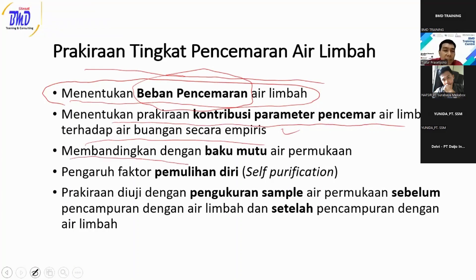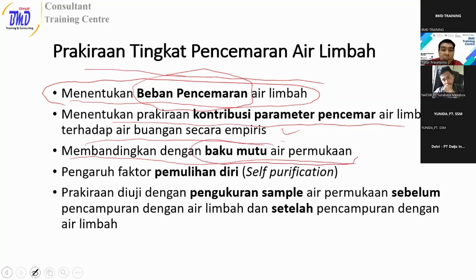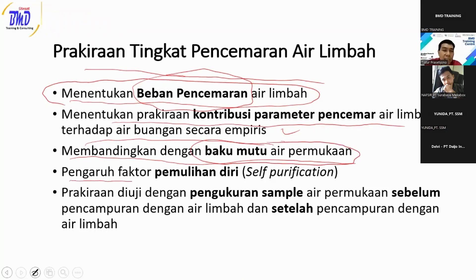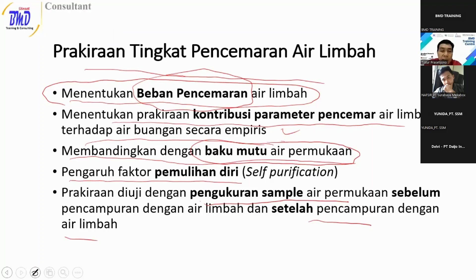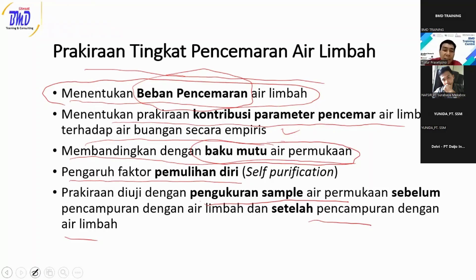Kemudian yang kedua, menentukan perkiraan kontribusi parameter-parameter air terhadap air buangan secara empiris — jadi kelompok-kelompok pencemar yang dominan. Yang ketiga, dengan membandingkan baku mutu air, untuk mengetahui apakah air permukaan sudah tercemar atau belum, misalnya baku mutu air kelas 1 atau kelas 2. Kemudian juga pengaruh faktor pemulihan diri, serta pengukuran sampel air permukaan sebelum dan setelah pencampuran air limbah — ada titik upstream dan downstream — untuk melihat apakah ada perbedaan yang signifikan.